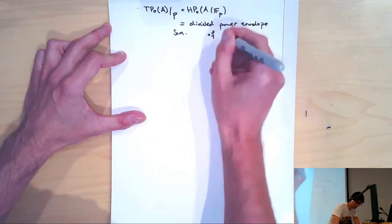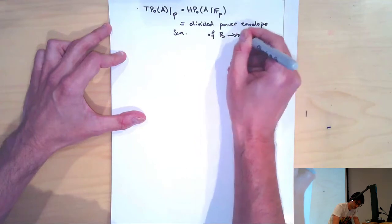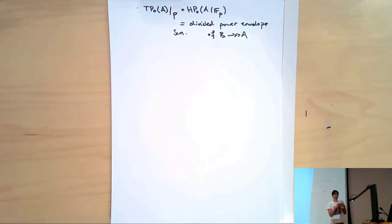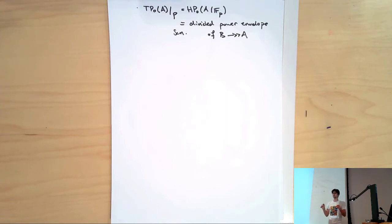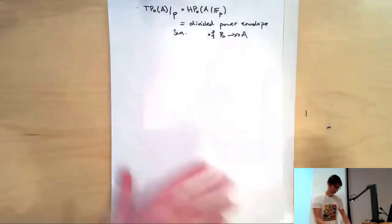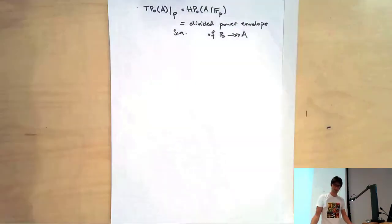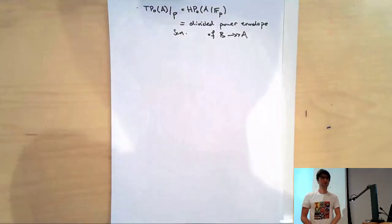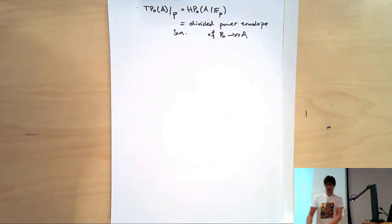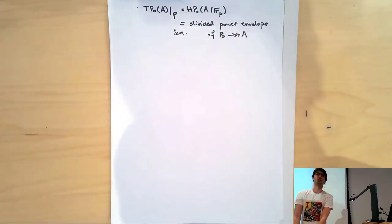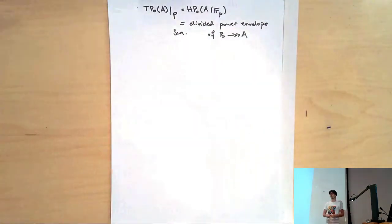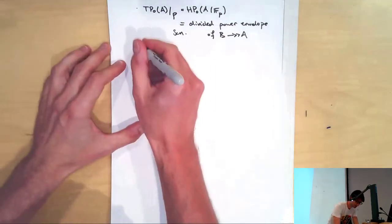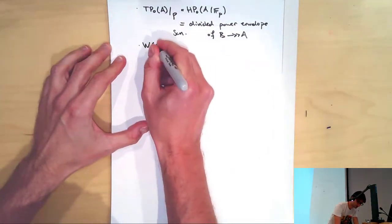On Sunday we saw that HP0 of A over FP was a divided power envelope. To be precise, it was the divided power envelope of B surjecting onto A — this ring is obtained by formally adding to B everything that looks like f to the n over n factorial as f varies over the ideal. What's important is that we can read off that whatever TP0(A) is, it's built out of an awful lot of divided powers, and mod p it already looks like a divided power envelope. And we know one more thing: it's a W(B) algebra.